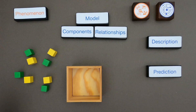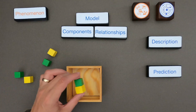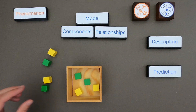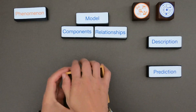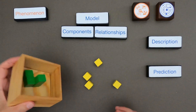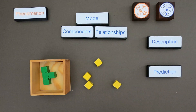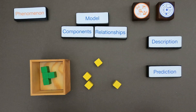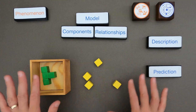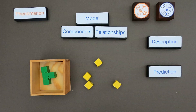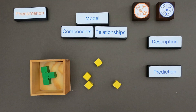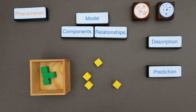For the next example I'm going to show you a simple phenomenon. I've got all these cubes — green and yellow cubes. I'm going to put them in this little box, shake the box, and when I dump it out you can see that the yellow cubes are going to come out and the green cubes are going to stay in the box. I'd encourage you to pause the video, identify the phenomenon, and then create a model. Modeling is not about being right or wrong — just make a model.